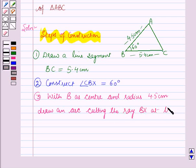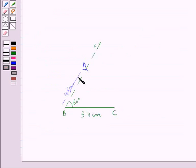The arc cuts ray Bx at the point A. You can see here, we have drawn with B as the center an arc of 4.5 cm which is cutting the ray Bx at the point A.